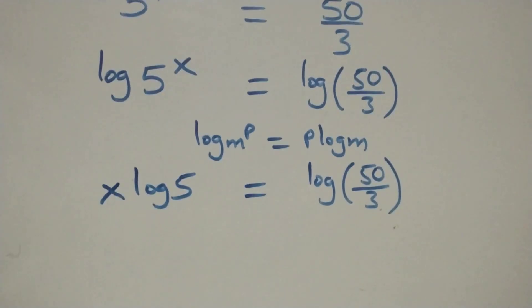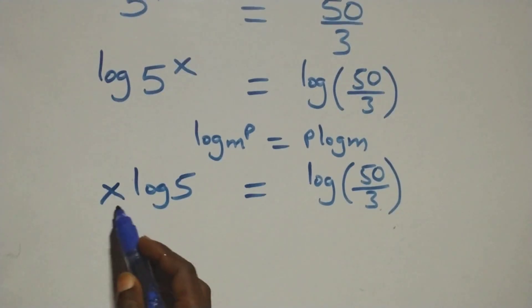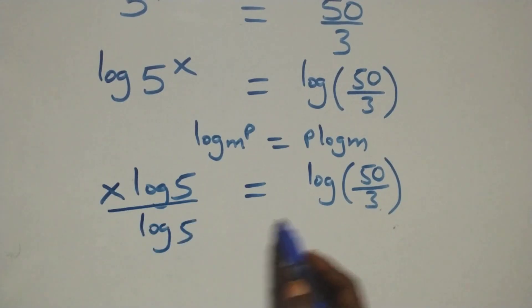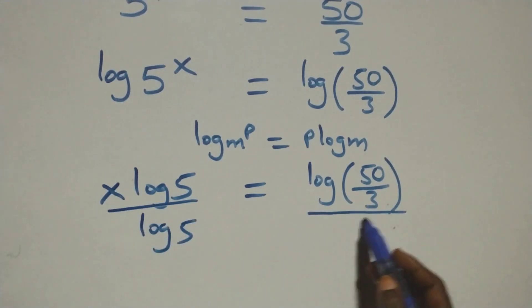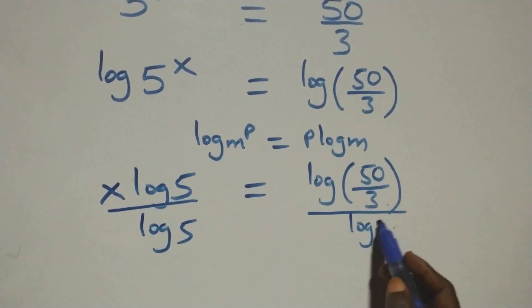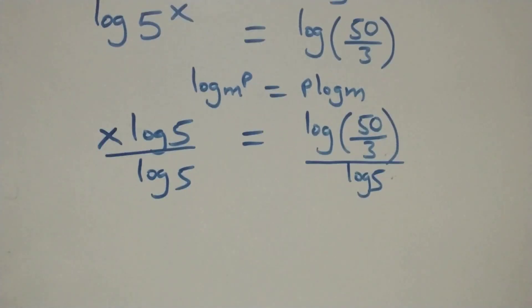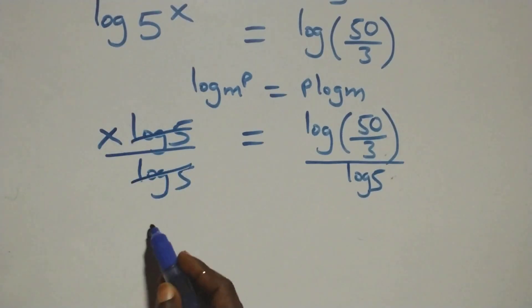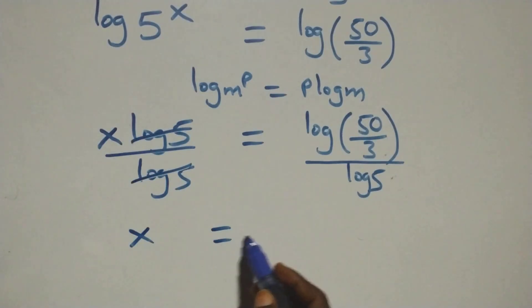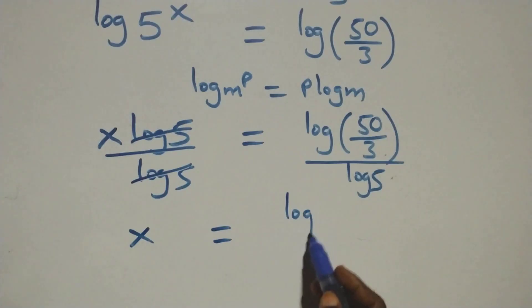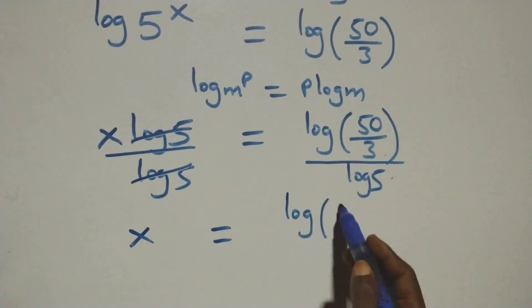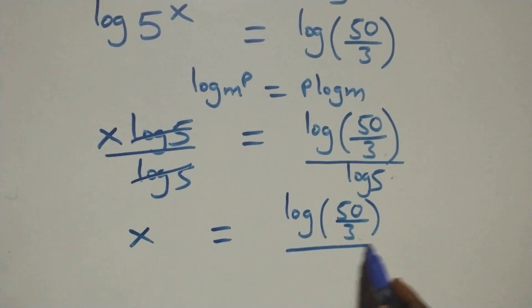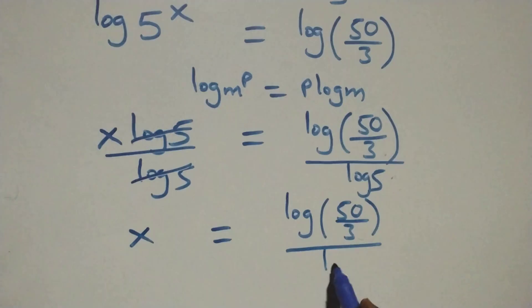Then we divide both sides by log 5. The log 5 terms cancel each other, giving us x equals log(50/3) over log 5.